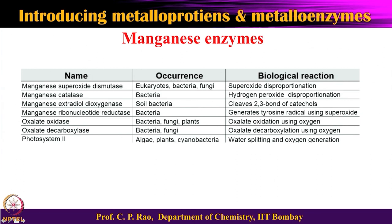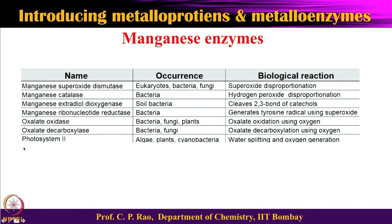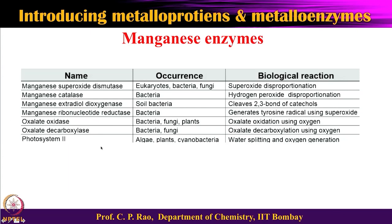Manganese extradiol dioxygenase will not be covered in detail here — it will be explained under the copper and iron stories. Manganese ribonucleotide reductase reactivity will be noted, but the mechanism will be explained under iron. Photosystem 2 has four manganese ions and is responsible for oxidizing water to O₂. It is present in plants, bacteria, and algae. The three enzymes to be studied in detail under manganese are: superoxide dismutase, manganese catalase, and photosystem 2.